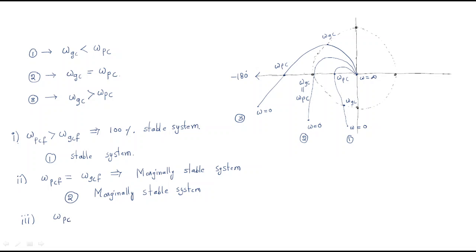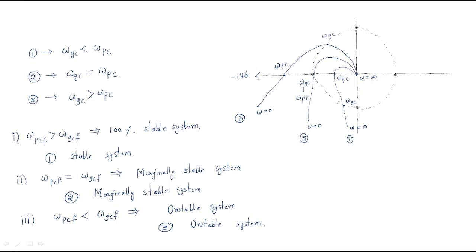The third condition: whenever phase crossover frequency is less than the gain crossover frequency, the system is unstable. That is why the third plot is named an unstable system. By observing the gain crossover frequency and phase crossover frequency, we can define the stability of the system.